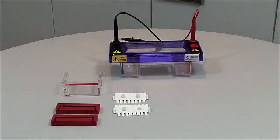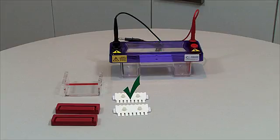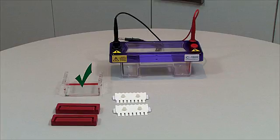This is what you will need: MS mini tank and lid with cables, combs, casting dams and gel tray with red tape on underside.